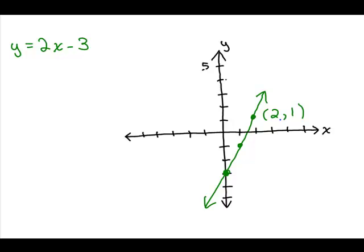For instance, this one ordered pair (2, 1) — if I plug in 2 for x and 1 for y, it makes it true. So yes, (2, 1) is one of the infinitely many ordered pairs that are solutions to this line.